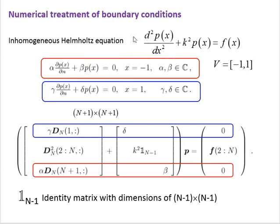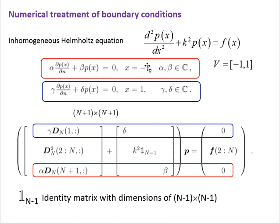We'll take an example of an inhomogeneous Robin equation represented as: the second derivative of P plus K-squared times P equals F. This is a second-order differential equation studied on the domain from minus 1 to 1. We consider homogeneous Robin boundary conditions, which are a combination of the well-known Dirichlet and Neumann boundary conditions.